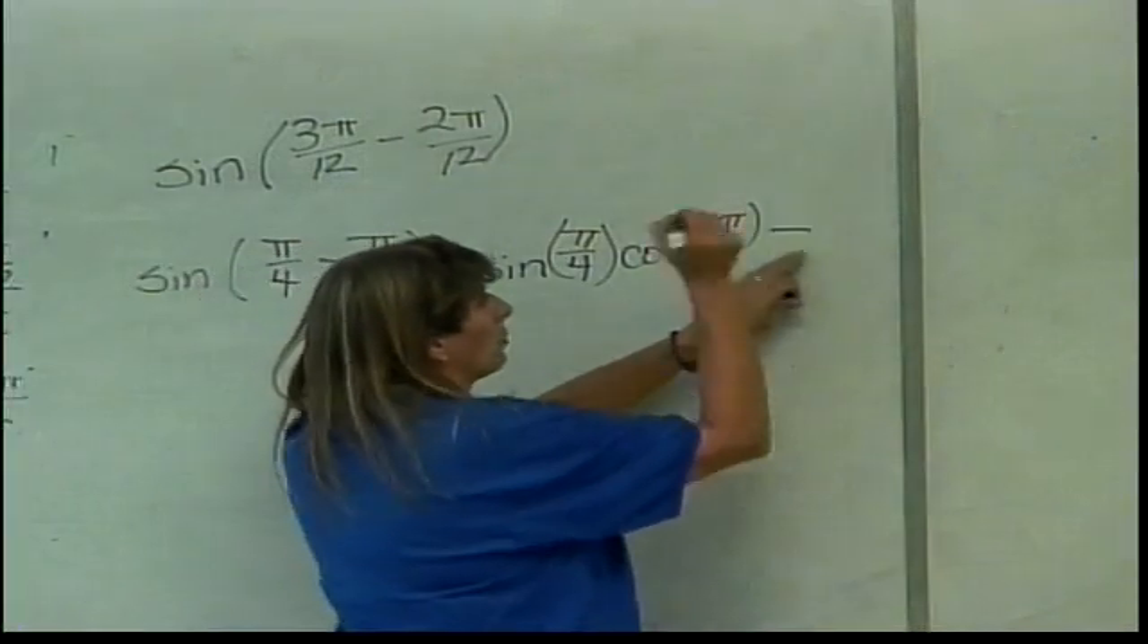Notice I don't have the negative sign here. The negative sign comes in next, telling me that I do what now? Subtract. And what do I subtract from that? Sine of the second angle. So sine of pi over 6. And cosine of the first one. So cosine of pi over 4.